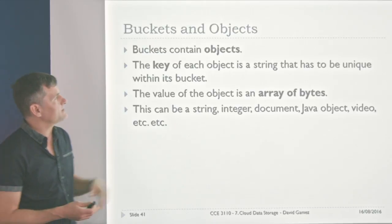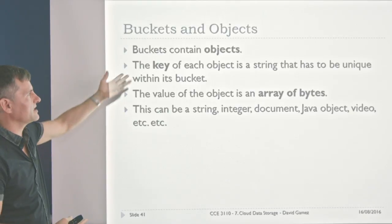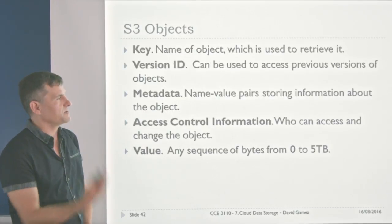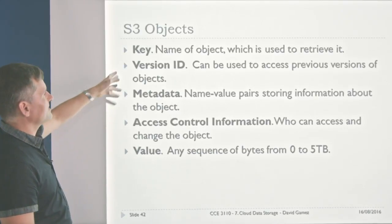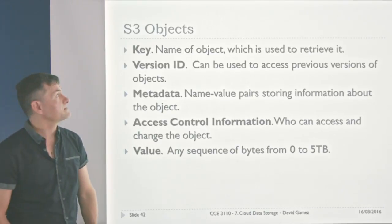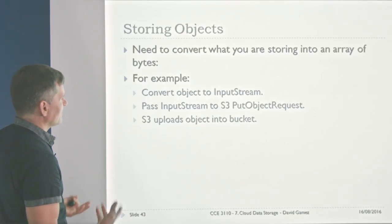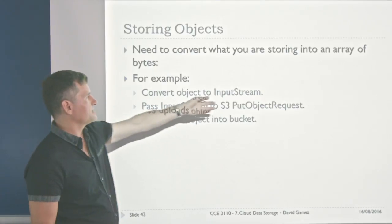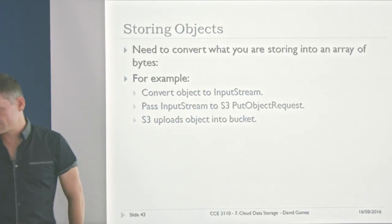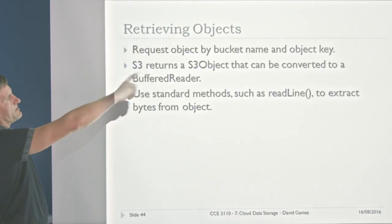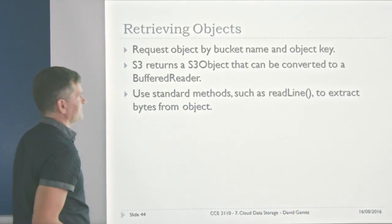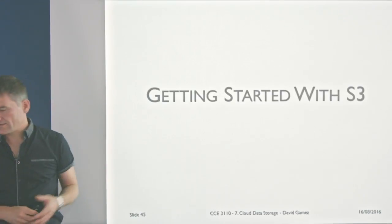Buckets contain objects. The key of each object is a string that has to be unique just within the bucket — not globally unique. The value is an array of bytes, which can be a string, integer, document, Java object, video — anything stored in a computer can be converted to bytes. Objects also have metadata like version ID, name-value pairs, access control information, and the value can be anything up to five terabytes. To store data, convert it to an input stream and pass it to the S3 put-object request. To retrieve it, request the object by bucket name and key, and S3 returns an S3 object that can be converted to a reader.